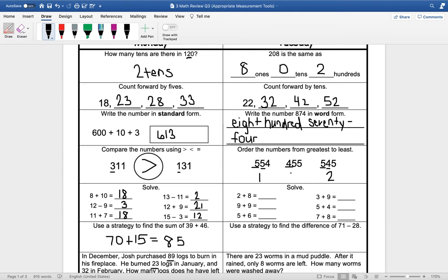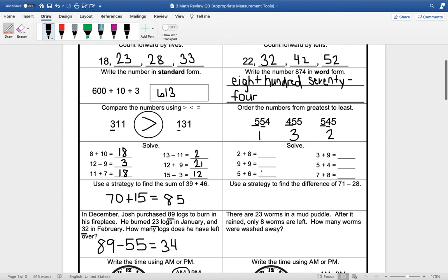All right, solving these addition problems. 2 plus 8 is 10, 9 plus 9 is 18, 5 plus 6 is 11, and 7 plus 8 is 15.